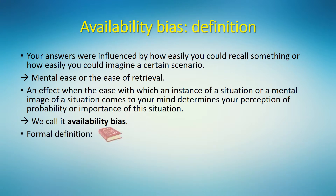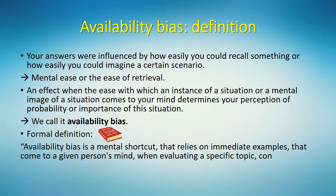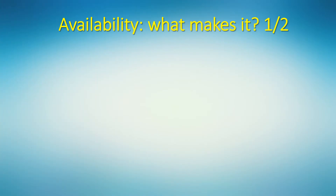Availability means that an association is readily available in your memory and is easily retrievable. The formal definition of availability bias, or availability heuristic, as it appears on Wikipedia, is the following: a mental shortcut that relies on immediate examples that come to a given person's mind when evaluating a specific topic, concept, method, or decision. We have already clarified the psychological mechanism behind this bias — availability bias is due to the mental ease of retrieval.